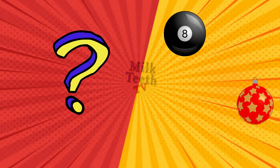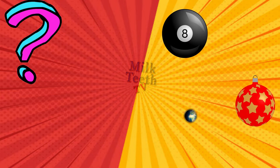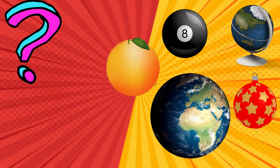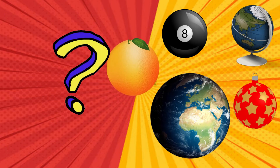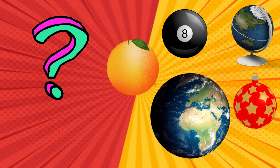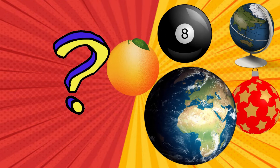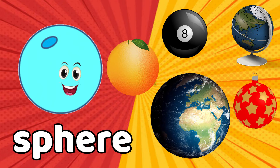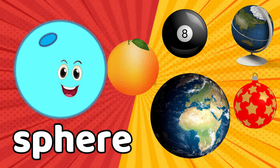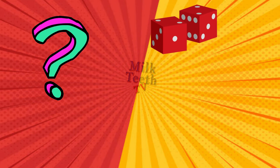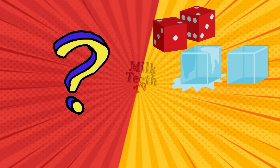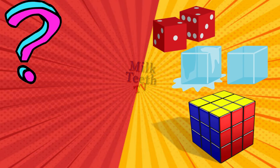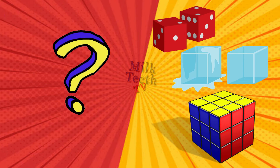That's a ball, a Christmas ornament, our planet Earth, the globe, and the fruit orange. They all have the same shape. Which shape is that? That's a sphere!